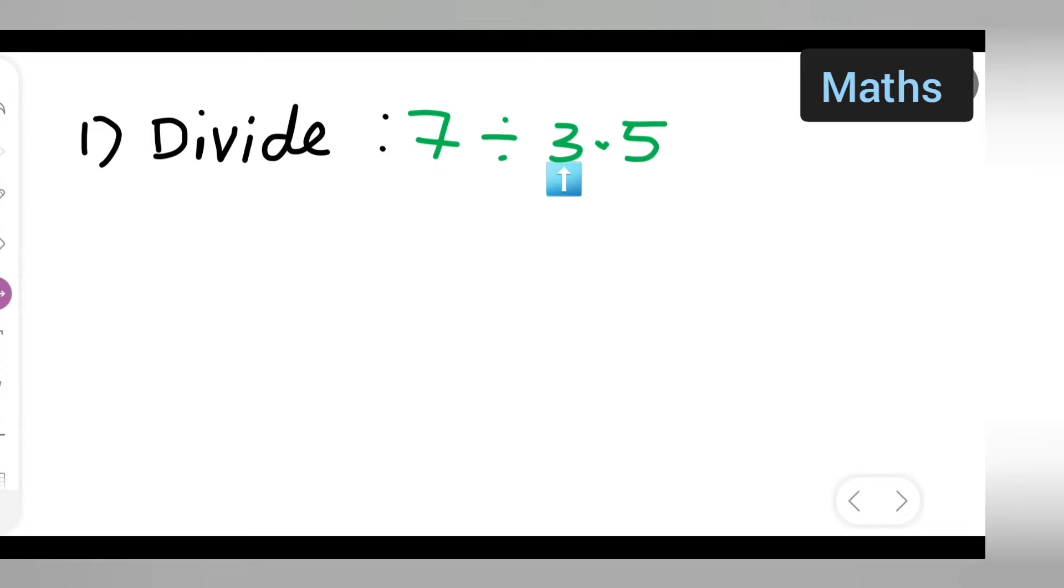First, take down the question: divide 7 by 3.5. Now how we are going to do this? First write down 7 divide by 3.5. Now basically this is equal to 7 divide by—if I want to remove the decimal point, I have to write 35 upon 10. I have removed the decimal point.